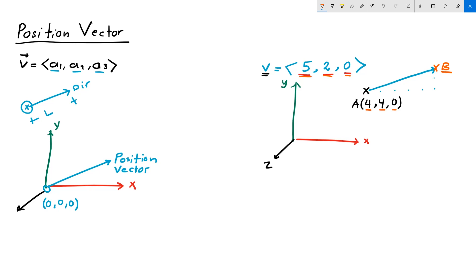Let's do that. b equals 4 plus 5, 4 plus 2, 0 plus 0. b coordinates are 9, 6, 0. That is the tip point of my vector v represented with a line segment anchored at point a that has the coordinates 4, 4, 0.